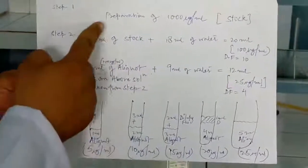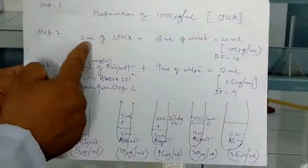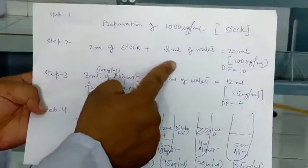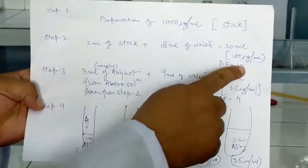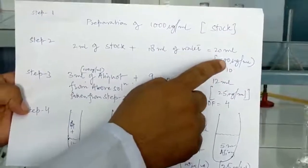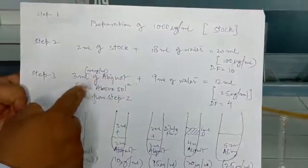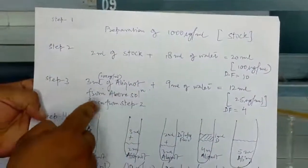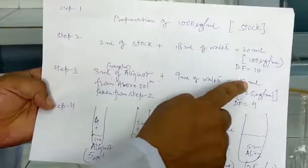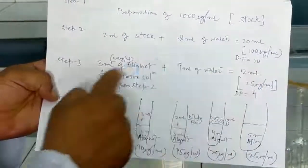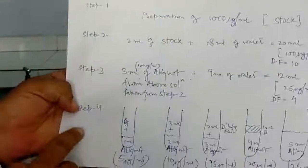To summarize the calculations: Step 1 — we prepared the stock solution at 1000 microgram per ml. Step 2 — 2 ml of the stock solution was taken and 18 ml of diluting fluid was added, making a total volume of 20 ml, giving a dilution factor of 10 and a concentration of 100 microgram per ml. Step 3 — 3 ml of aliquot from the previous step was taken and 9 ml was added; total quantity became 12 ml, dilution factor 4, and concentration became 25 microgram per ml.